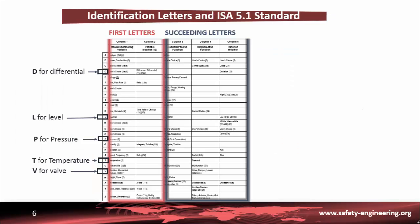As defined by ISA 5.1, the identification letters used to specify the function of a field device are organized in a specific manner. The meaning of a letter varies depending on whether it is a first letter or a subsequent letter. A table of the identification letters defined by the standard is shown in this slide.